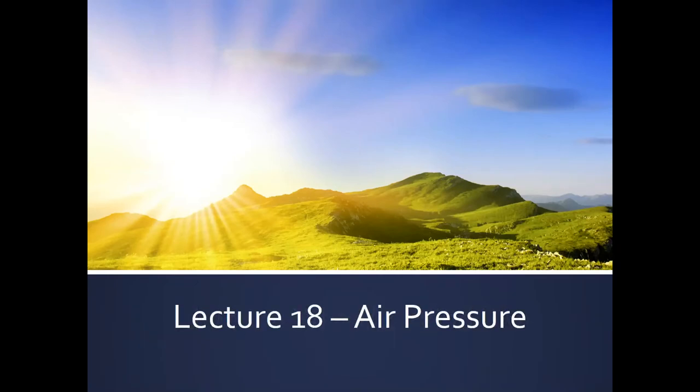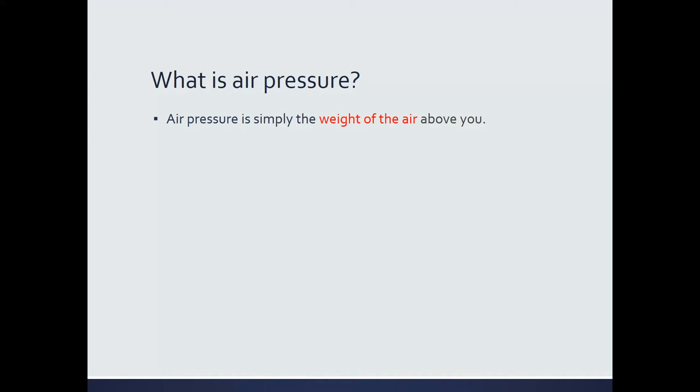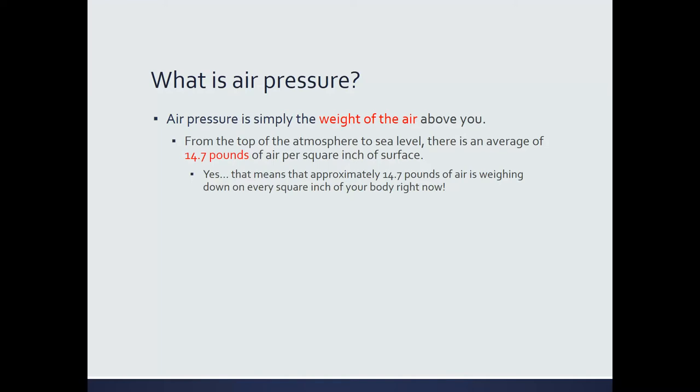Now why do we have wind? To understand why we have wind, we need to understand a very important property of our atmosphere: air pressure. Air pressure comes from one often unappreciated but very important fact, which is that air actually has weight. Our bodies are acclimated to this, but right now you are sitting in a room filled with air made up of trillions and trillions of molecules, each with a certain mass. When you add all of them up, these molecules exert a certain amount of weight — on average at sea level, about 14.7 pounds per square inch.